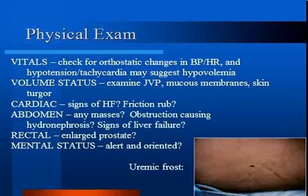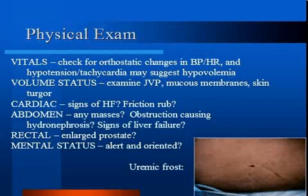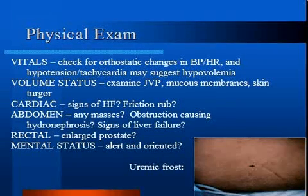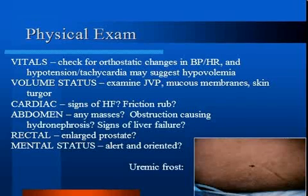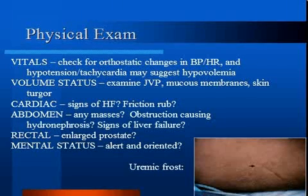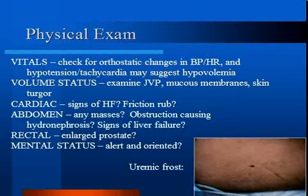On physical exam, it is important to determine volume status, which helps separate pre-renal from renal causes. Check vitals and assess for orthostatic drop in blood pressure or rise in heart rate, flat JVP, dry mucous membranes, and increased skin turgor, which all suggest hypovolemia causing pre-renal failure. Look for signs of heart failure including high JVP, crackles, S3, and peripheral edema. Friction rubs suggest pericarditis. Abdominal exam should look for liver cirrhosis and masses, including a rectal exam for enlarged prostate. Assess mental status for azotemia-related confusion, and look for uremic frost and asterixis.